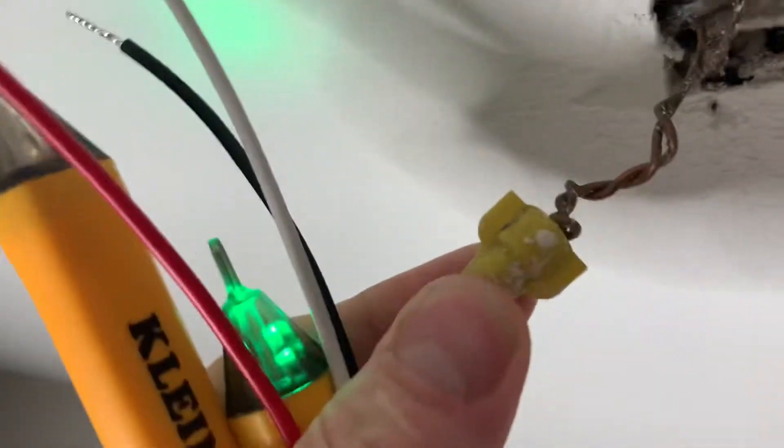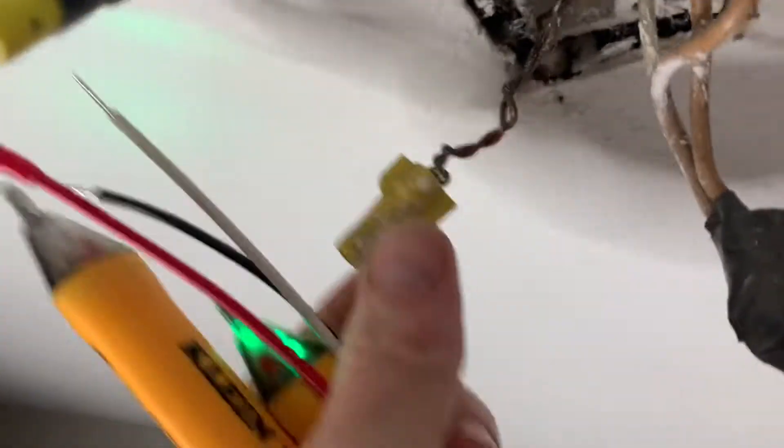All right, here's what I'm working with here. Got some black wires, got some white ones, and it looks like the ground's tied together there.